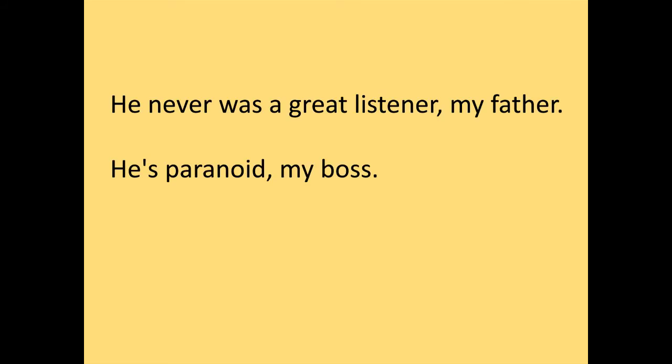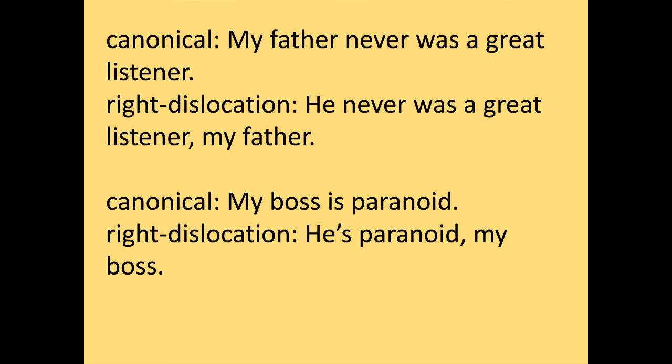What about the other examples? 'He never was a great listener' is fine, but there's something stuck on the end. 'He's paranoid' is fine, but there's something stuck on the end — and those things should really be the subject of the sentence. 'My father never was a great listener' — canonical. 'My boss is paranoid' — canonical. But those things got moved and replaced by a pronoun. The only difference between these and left dislocation is that they got moved to the other side — to the end instead of the beginning. So this is right dislocation. In both cases with dislocation, the thing that gets taken out gets replaced in its original place by a pronoun.